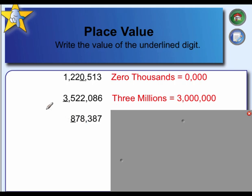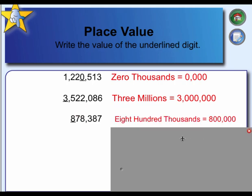The last one: eight hundred seventy-eight thousand, three hundred eighty-seven. Do you hear me naming the big number first? Eight hundred seventy-eight thousand, three hundred eighty-seven. My eight is underlined — the first eight on the far left. That would be my hundred thousands place, so I would have eight hundred thousands.